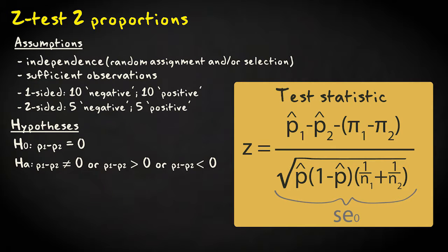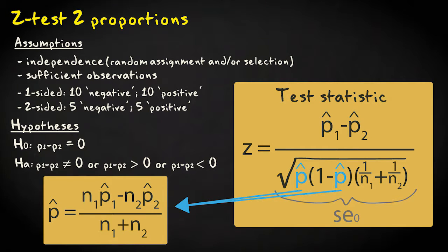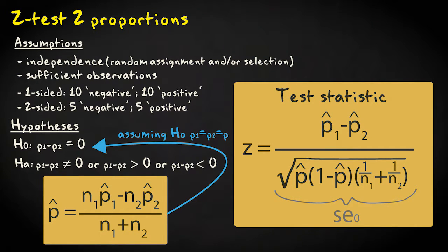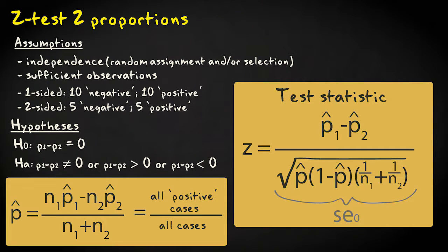The test statistic z equals the estimate minus the expected value under the null hypothesis divided by the standard error under the null hypothesis. The population difference under the null equals zero so this simplifies to this formula. P-hat is the pooled proportion assuming the proportions are the same. The best estimate of this common proportion is the pooled proportion, the average proportion correcting for sample size. It equals the total number of positive cases in both groups divided by the total number of cases.